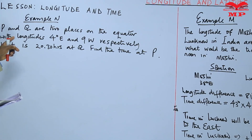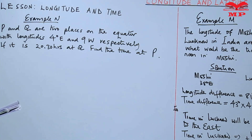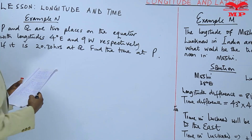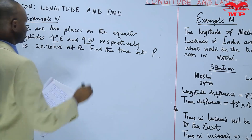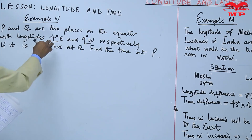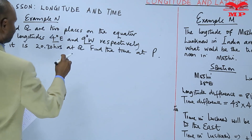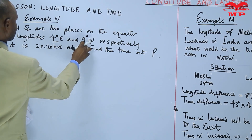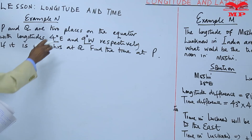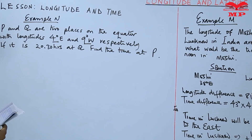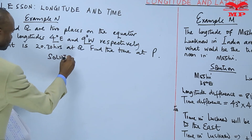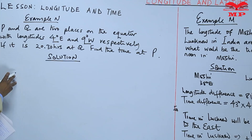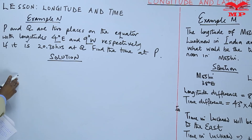Example 2: P and Q are two places on the equator with longitudes 4 degrees West and 9 degrees West respectively. Since P is at 4 degrees West and Q is at 9 degrees West, P is more easterly. A simple sketch will help — P is drawn to the right and Q further to the west.